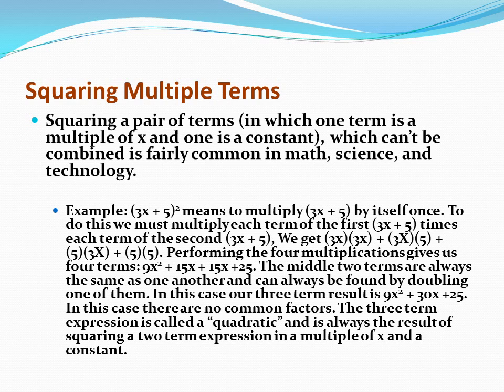Squaring multiple terms. Squaring a pair of terms in which one term is a multiple of x and one is a constant, which cannot be combined, is fairly common in math, science, and technology. For example, (3x + 5)² means we have to multiply 3x + 5 times itself. To do this, we must multiply each term in the first, 3x + 5, times each term in the second, 3x + 5. We get 3x times 3x plus 3x times 5 plus 5 times 3x plus 5 times 5. Performing the four multiplications gives us four terms. The middle terms are always the same and can be found by doubling one of them. In this case, our three-term result is 9x² + 30x + 25. There are no common factors. The three-term expression is called a quadratic and is always the result of squaring a two-term expression with a multiple of x and a constant.